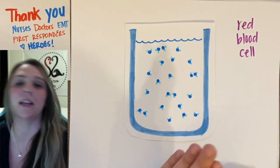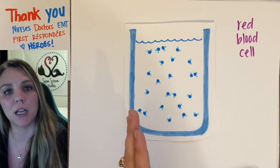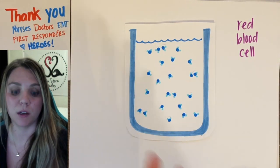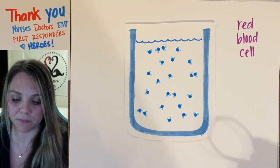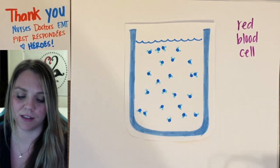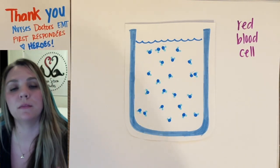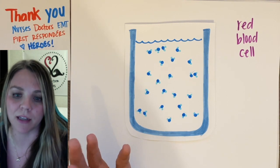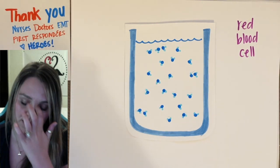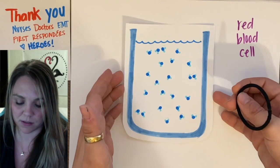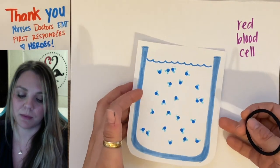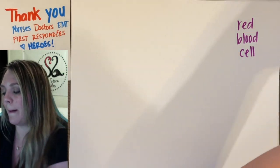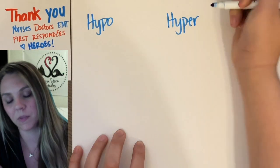What you want is a nice isotonic solution with your red blood cells and your blood. That's why it's really important to maintain a good blood sugar level, especially for someone who's diabetic. Just keep that in mind going forward in your medical future.